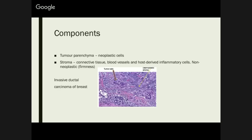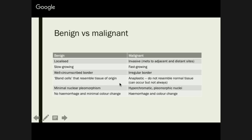The components of a neoplasm are basically twofold: you have your neoplastic cells, which form your tumour parenchyma, and your connective tissue, blood vessels, and all your actual host cells, which constitute the stroma. This stroma results in the firmness of your tumour — when palpating tumours, some are harder than others, and it's based on the ratio of parenchyma to stroma. You don't really need to memorise the benign versus malignant list because it all makes sense once you get your head around it.